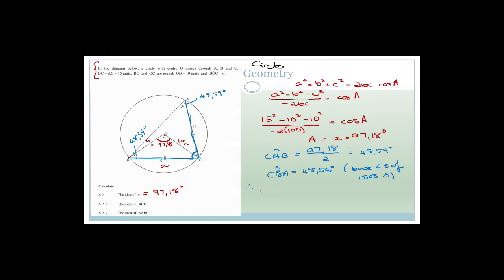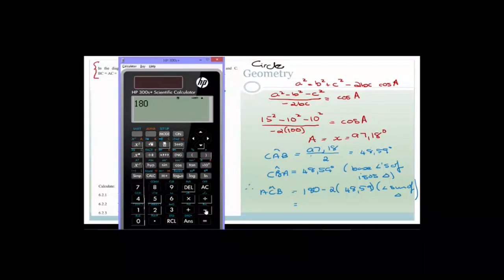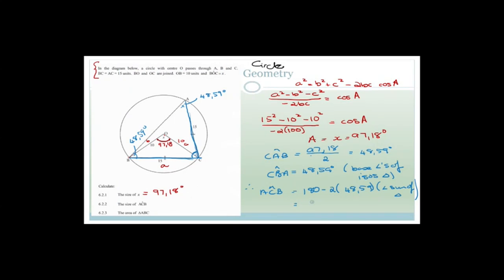Therefore, angle ACB = 180° − 2(48.59°) = 180° − 97.18° = 82.82° by the angle sum of triangle.